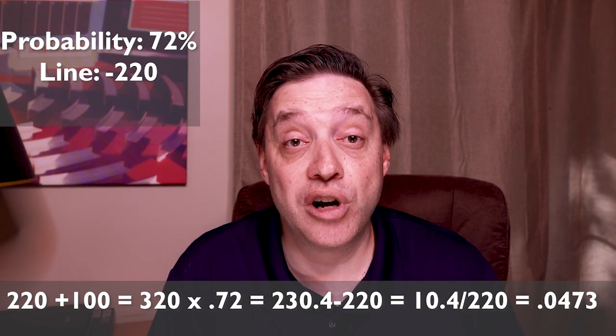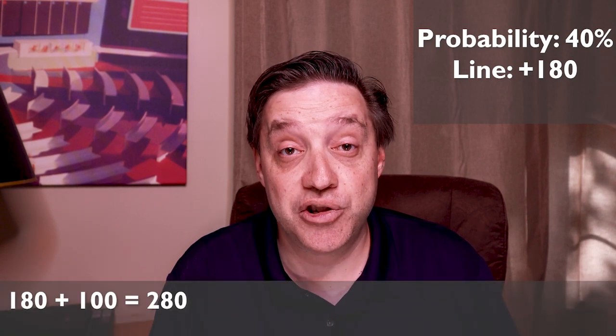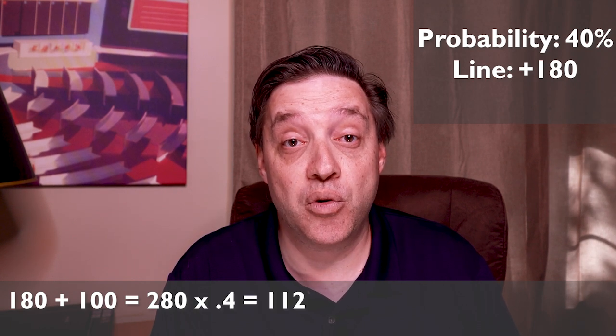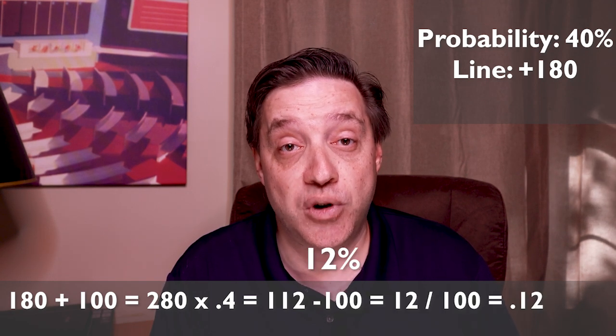Now if you have a situation where the beginning odds are a positive number, the formula is slightly different. You still add 100 and multiply that by your probability, however, now you just subtract 100 and then divide by 100 to reach your edge. Let's run through an example of that. Suppose you have a team that you predict has a 40% probability to win, and they're priced at plus 180. You take 180, add 100 to get 280. You multiply that by your probability, which is 0.4, to get 112. Now you subtract 100, divide by 100, and you find yourself with a nice fat 12% edge.